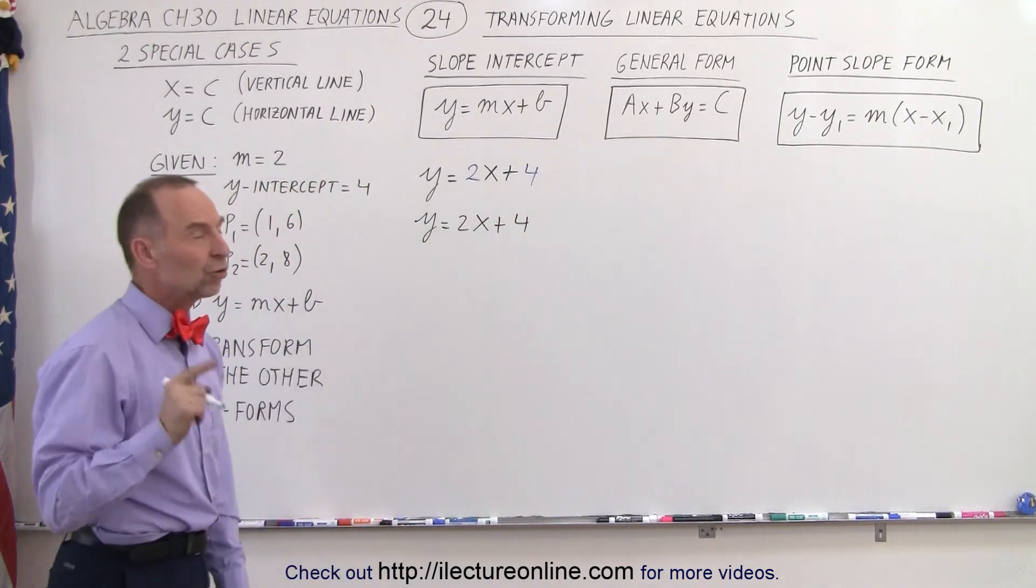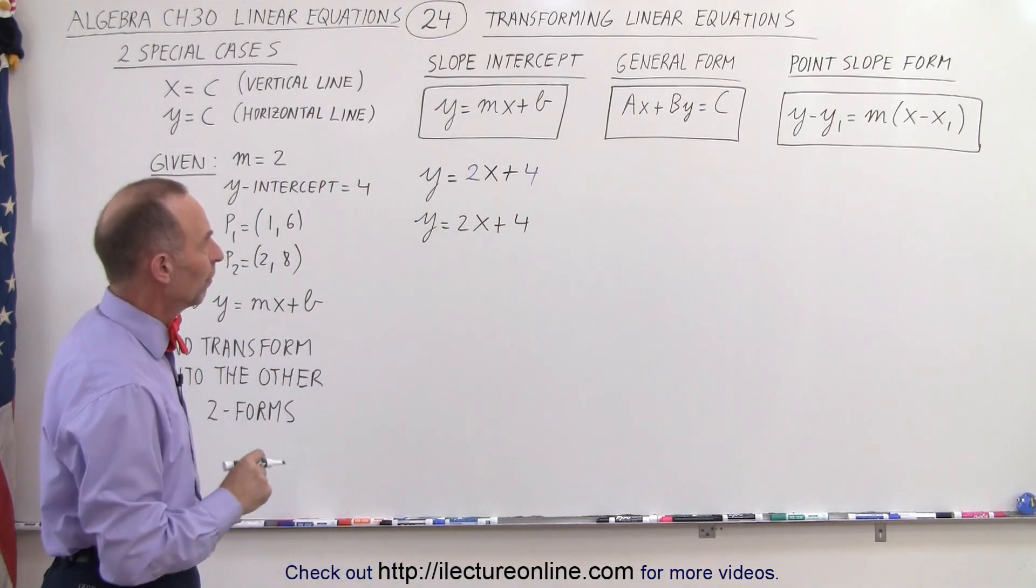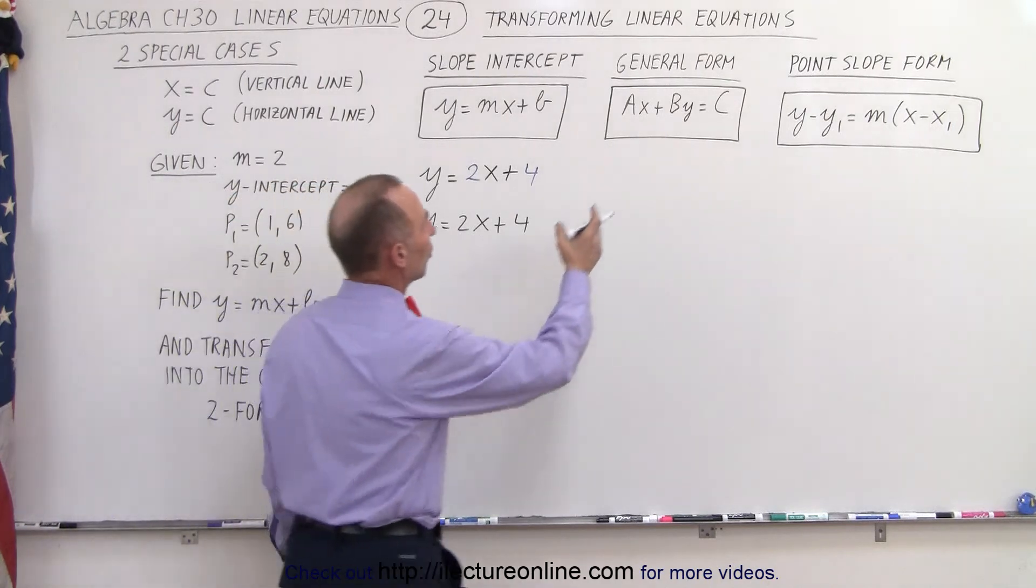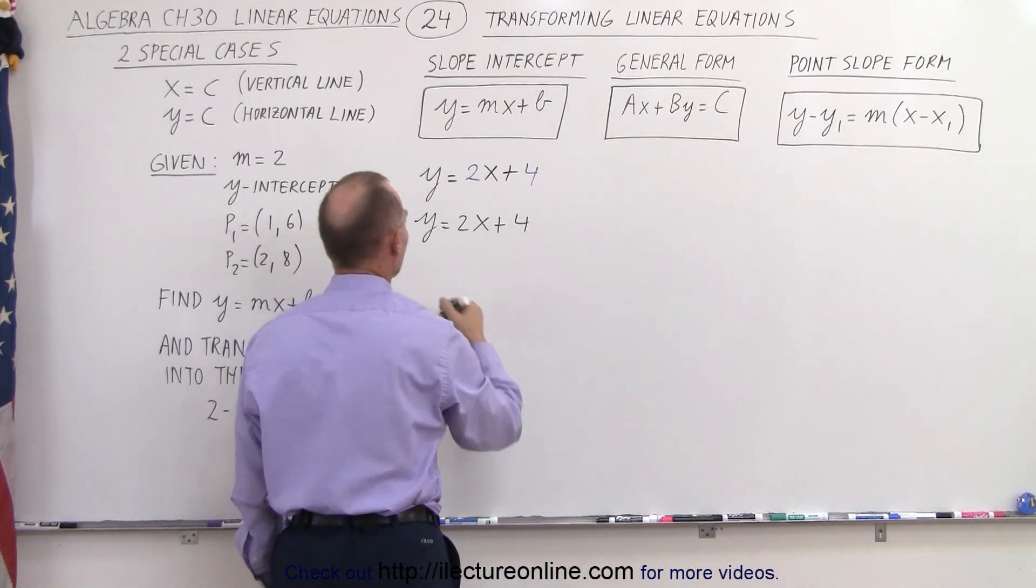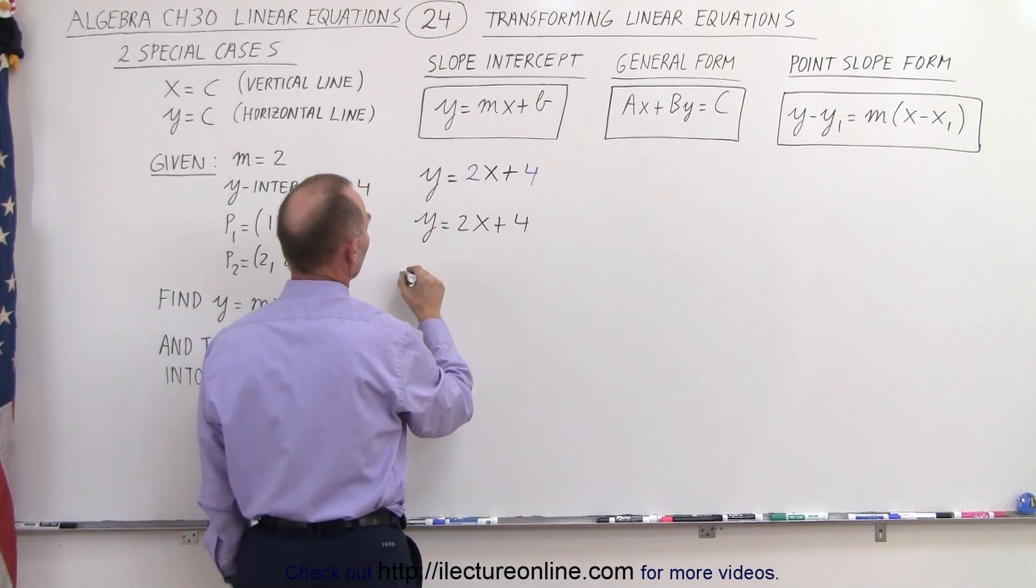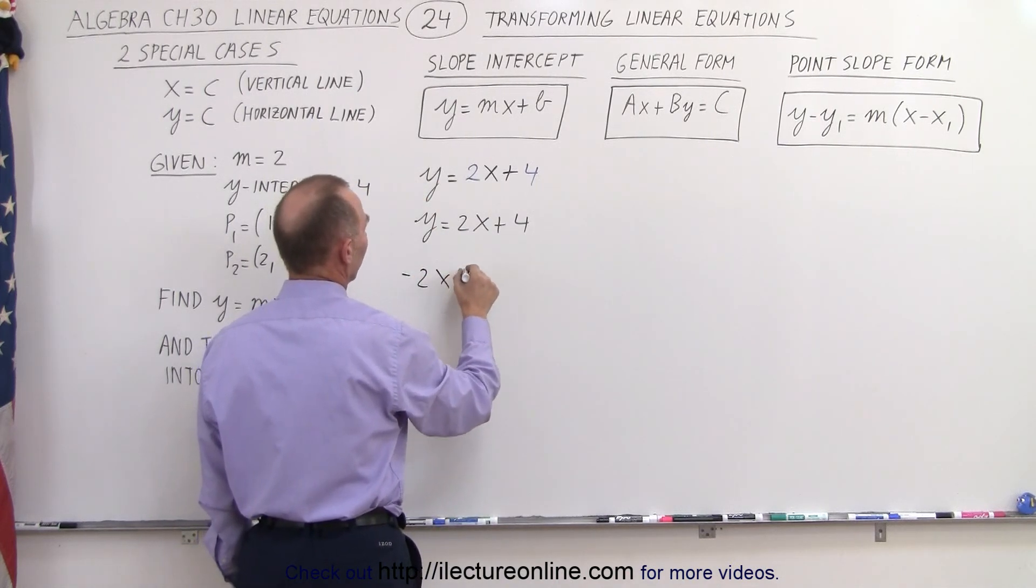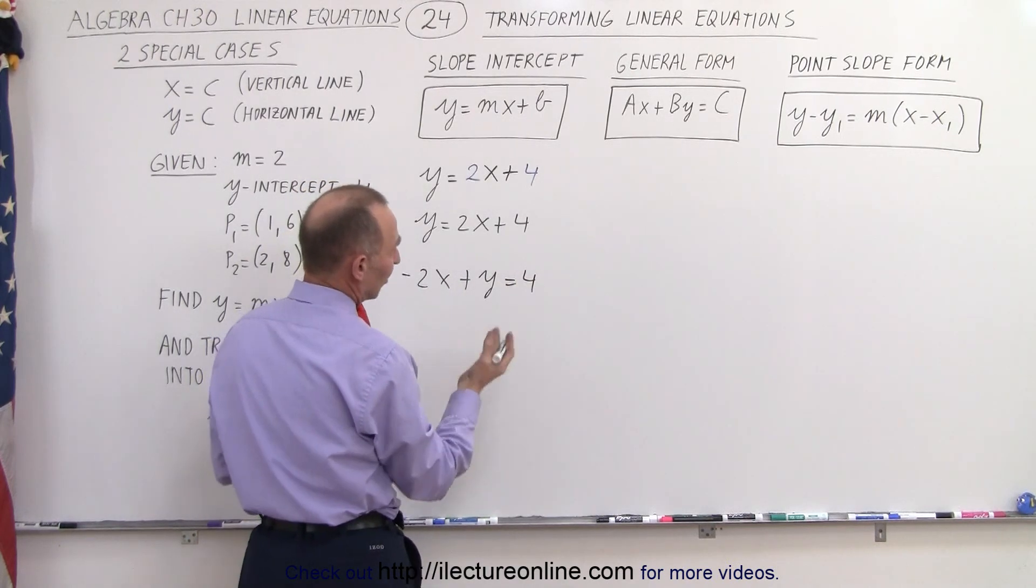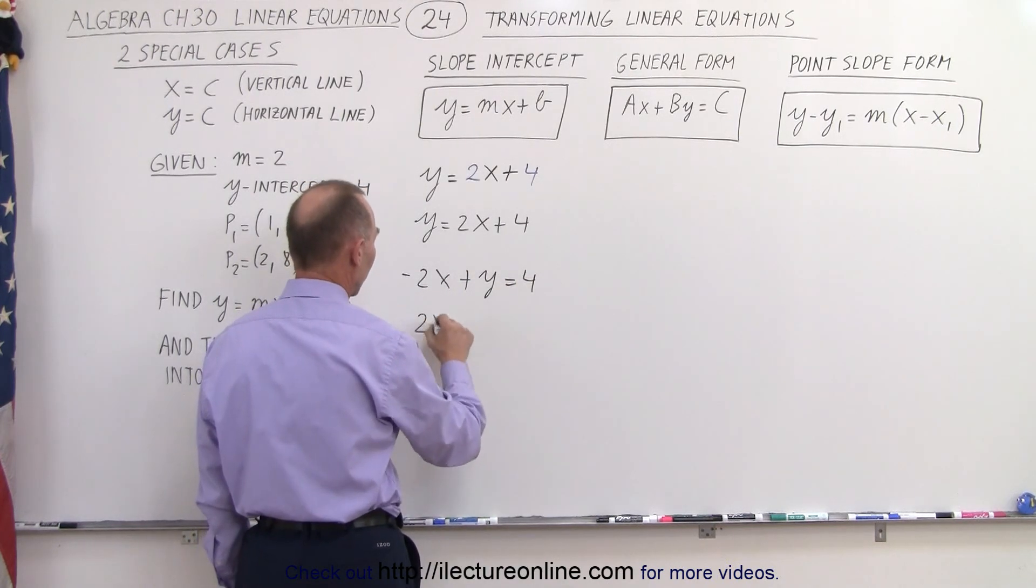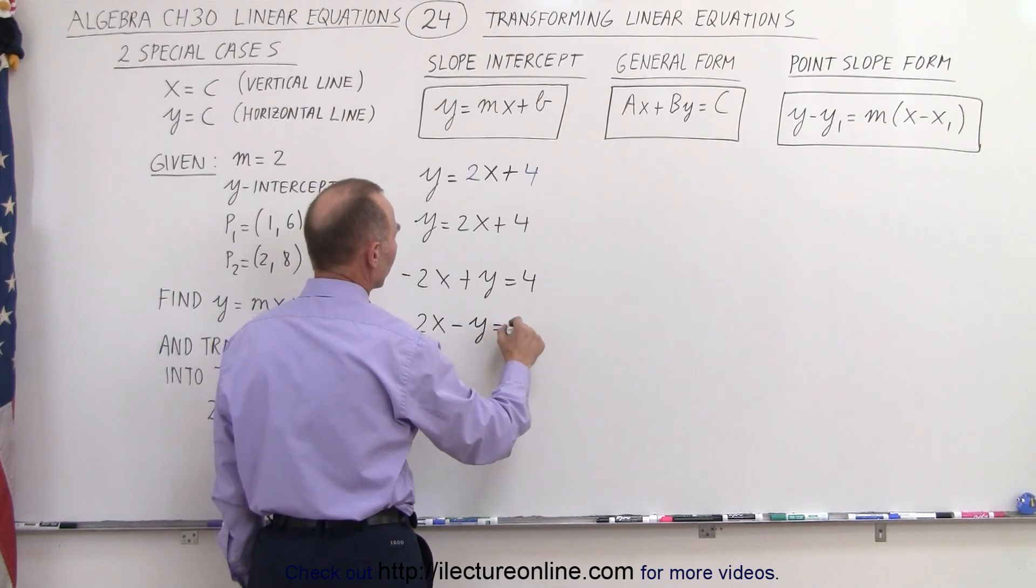So now how do we transform that into the general form? Well, notice we want all the x and y terms on the left side, so what we need to do is simply move the 2x to the other side, and so we can write this as minus 2x plus y equals 4. And if we multiply both sides by negative 1, we can write this as 2x minus y equals minus 4.